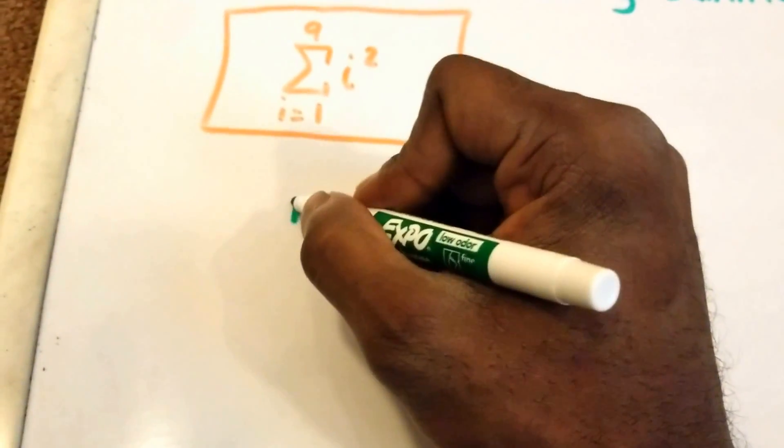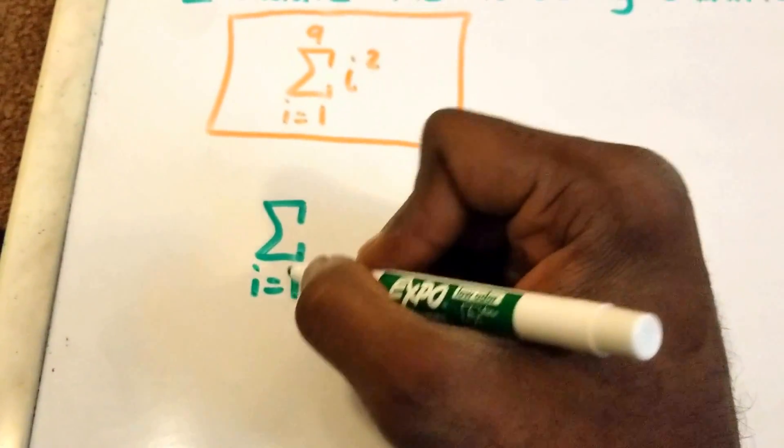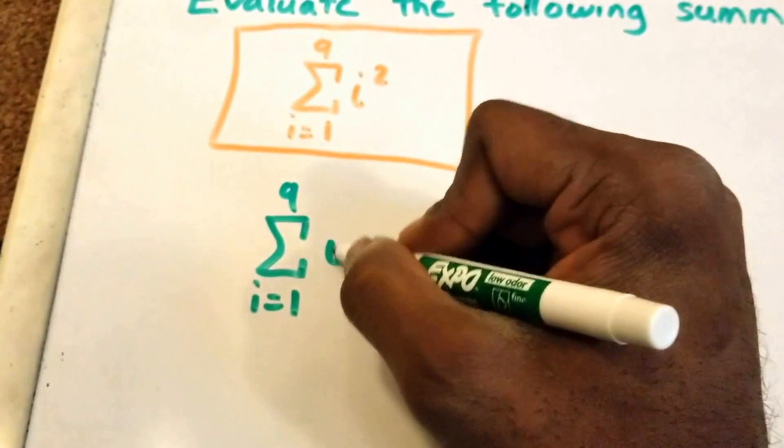So we have the summation from I equals 1 to 9 of I squared. Now what is this equal to?